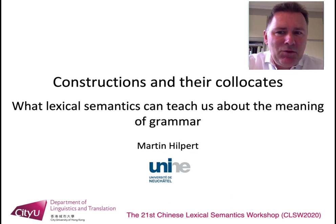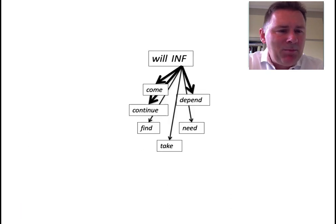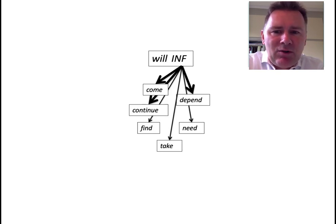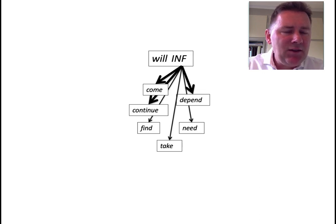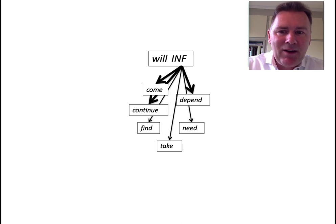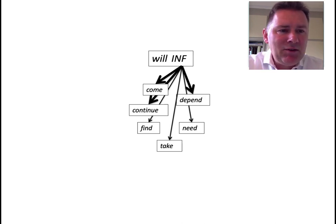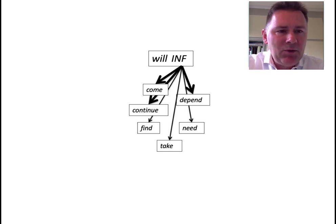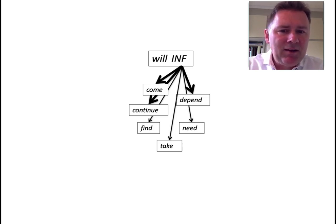I take a view of language shared by more and more researchers in construction grammar, in which linguistic knowledge is modeled as a network, and constructions are seen as nodes within that network. To take a concrete example, constructions such as the English auxiliary verb will form an associative network with other linguistic units, in particular with the lexical verbs that they take as infinitive complements.